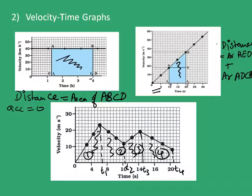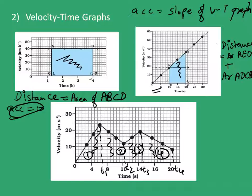The third information we get from velocity time graphs is the acceleration. Acceleration is the slope of the velocity time graph. In the first case the slope is 0, hence acceleration is 0. In the second case the slope is positive and constant, so acceleration is positive and constant. In the third case, region 1 has positive acceleration, region 2 has negative acceleration, region 3 is positive again, and region 4 is negative.